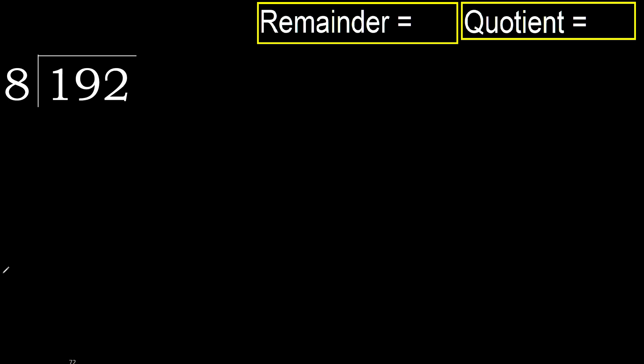192 divided by 8. 1 is less, therefore move to the next digit. 19 is not less, so we work with 19.